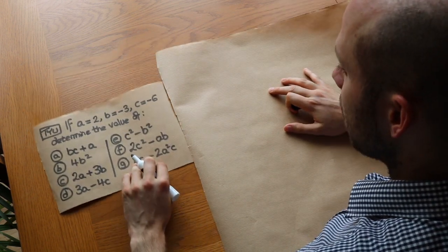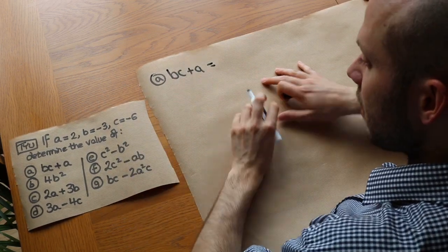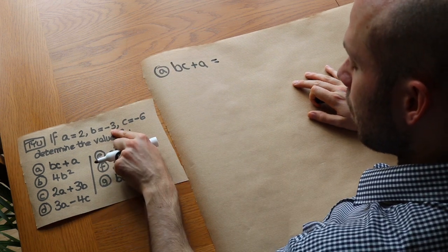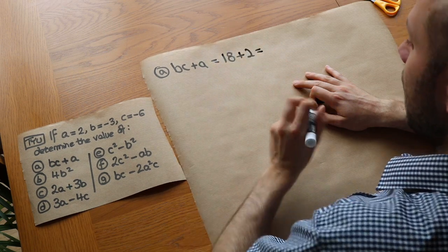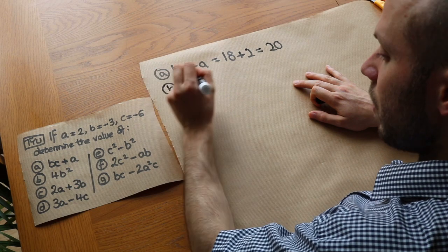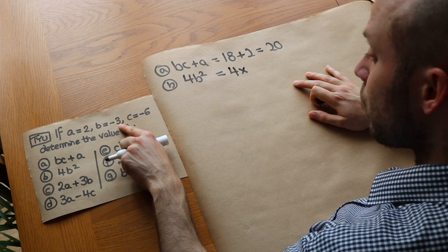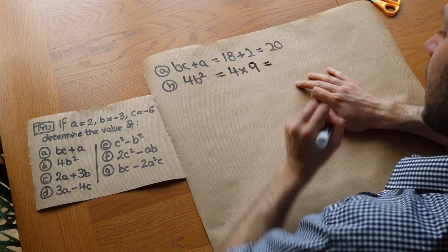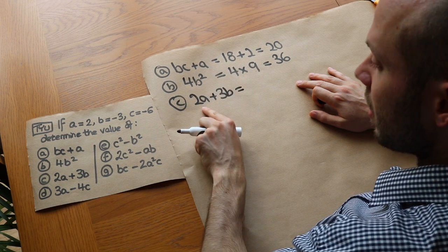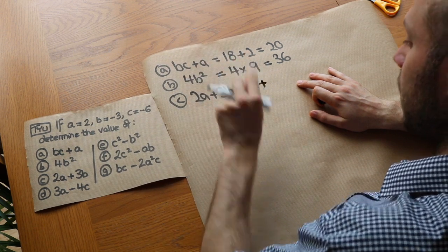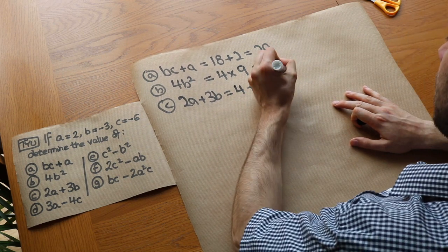Let's have a go. bc plus a: bc is minus 3 times minus 6, which is 18, plus a which is 2, so 18 plus 2 is 20. 4b squared means 4 lots of b squared: minus 3 squared is 9 (negative times negative is positive), and 9 times 4 is 36. 2a plus 3b: 2a is 2 lots of 2, which is 4, plus 3b which is 3 lots of minus 3, that's minus 9. When we add a negative we subtract it, so 4 minus 9 is minus 5.